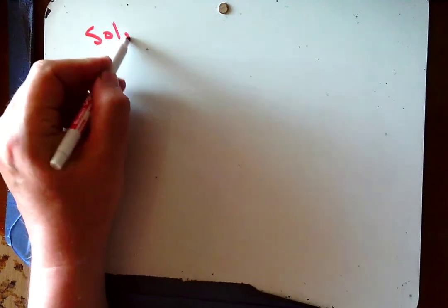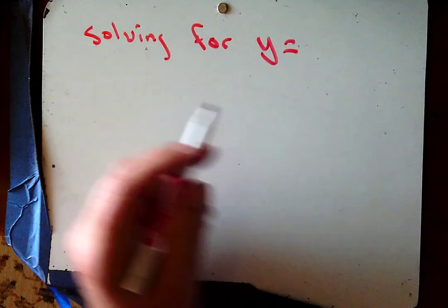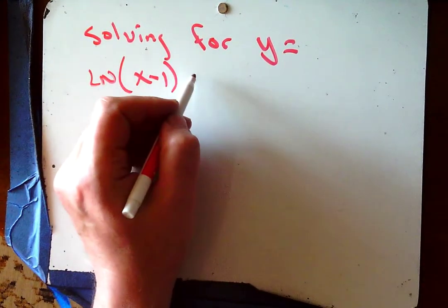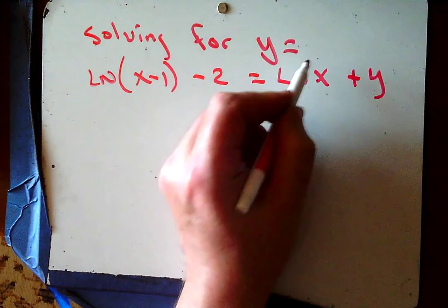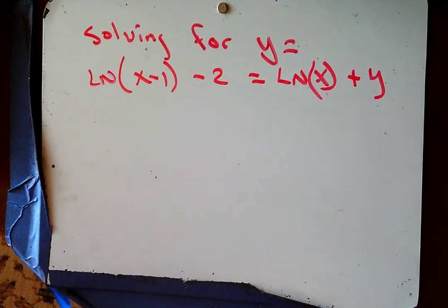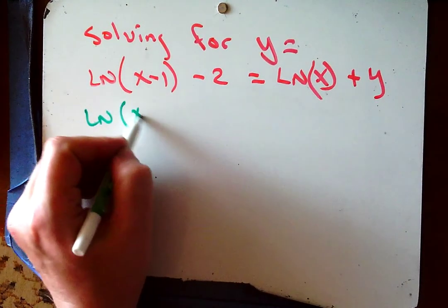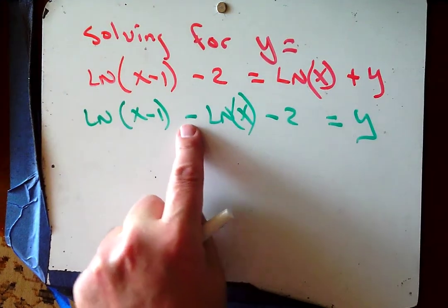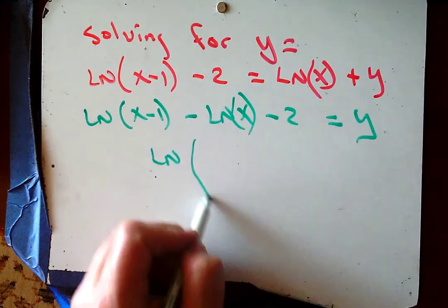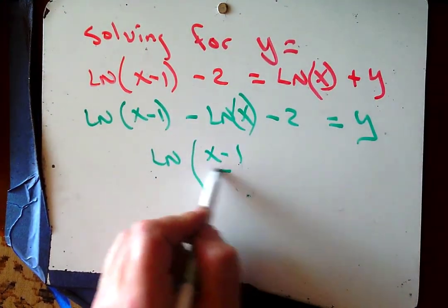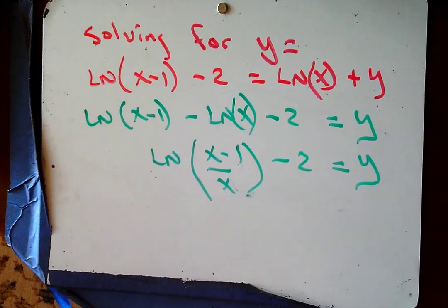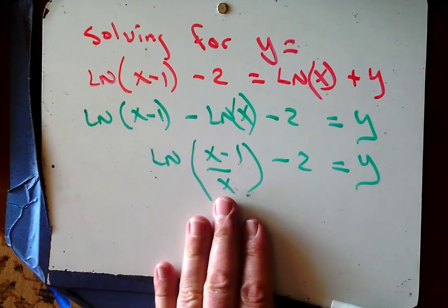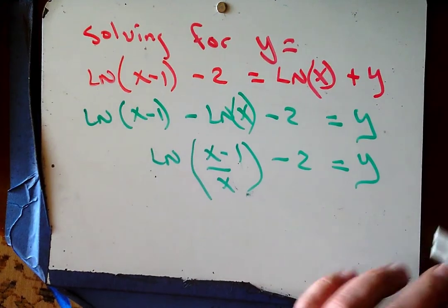One last solving problem — solving for y rather than a number. Given ln(x − 1) − 2 = ln(x + 1), rewrite as ln(x − 1) − ln(x − 2) = y. Two logs joined with subtraction — use the quotient property to condense: y = ln((x − 1)/(x − 2)). That's it — we're solving for y, not x, so we don't move anything across the equation.